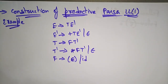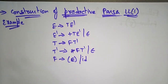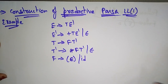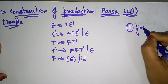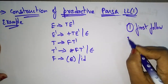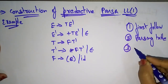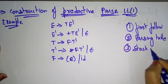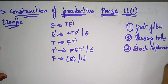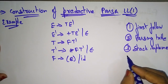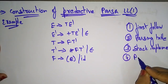Let's continue with the predictive parser LL(1). In the previous video I explained how to construct the predictive parser using the First and Follow functions. The steps for predictive parser LL(1) are: first, find the First and Follow functions; second, construct the parsing table using First and Follow; and third, implement the stack. Using stack implementation with the top-down approach, you can construct the parse tree.